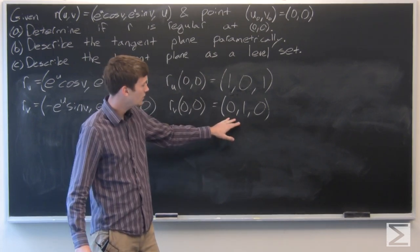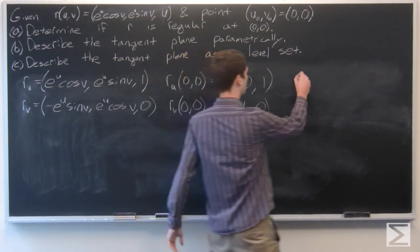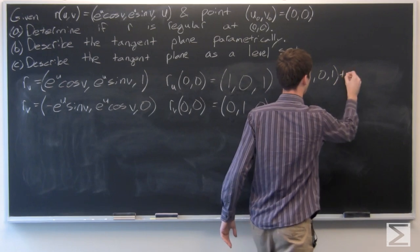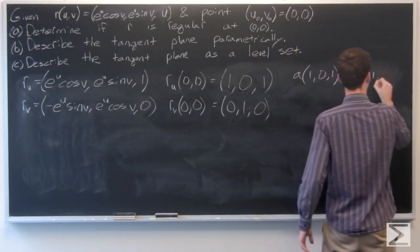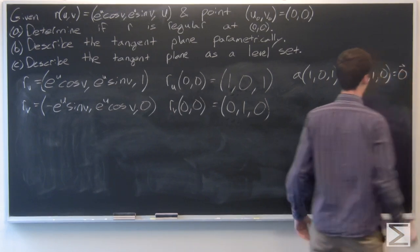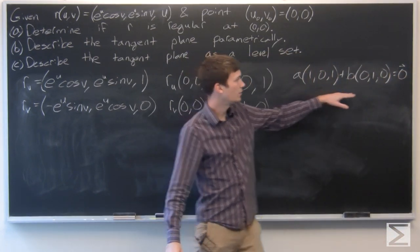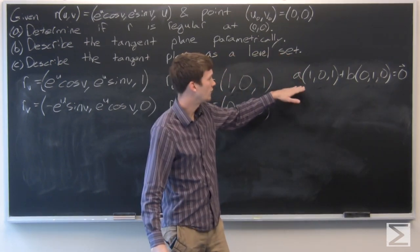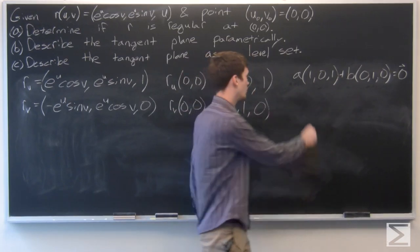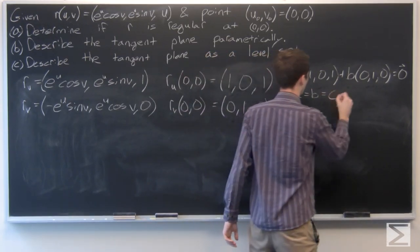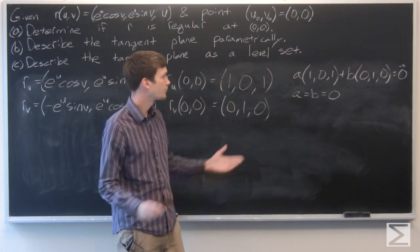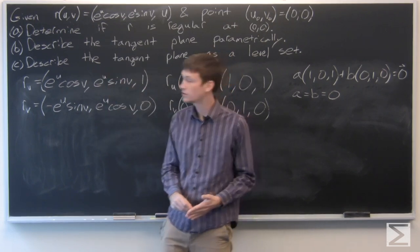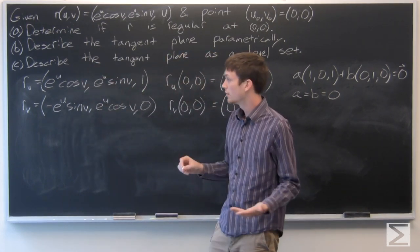It's clear that you can't make a linear combination of these two vectors equal to the zero vector without forcing both a and b equal to 0, which implies that r is regular. So we've determined that r is regular, and therefore we can describe the tangent set parametrically.